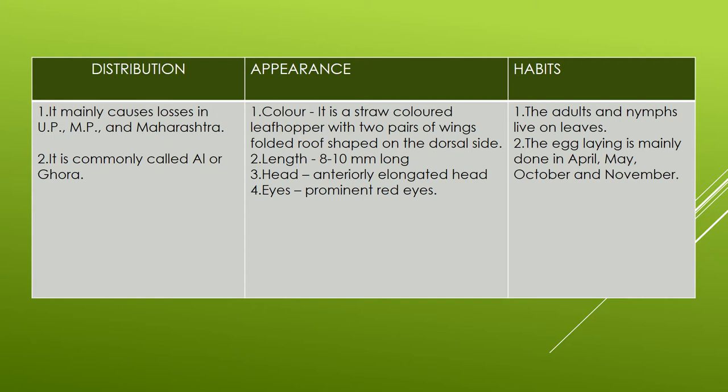Regarding habits: adults and nymphs — both stages of the life cycle — are found on the leaves of sugarcane. Egg-laying mainly occurs in April, May, October, and November.